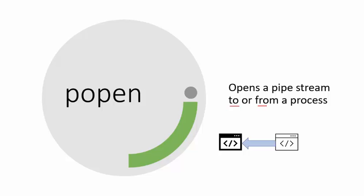An important point to remember here is that the popen function opens a pipe stream which is unidirectional. That's why we can only either send the data to a process or receive data from a process. So if you want to both send and receive data, you need to open two pipes — one in read mode and one in write mode.